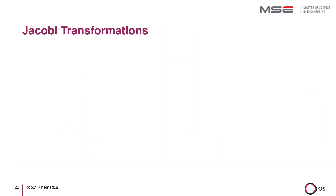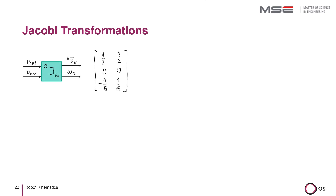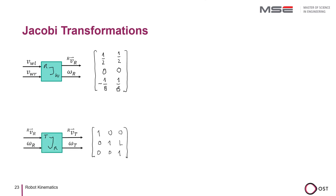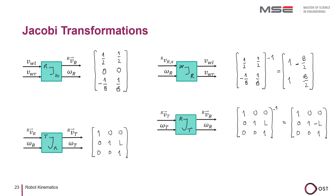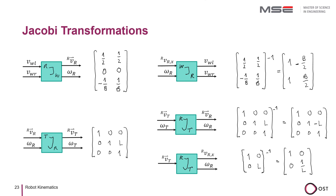We have found the following Jacobian transformations: transformation from wheel system to robot coordinate system; transformation from robot coordinate system to TCP coordinate system; transformation from robot coordinate system to wheel system; transformation of velocity vector and rotation speed from TCP system to robot coordinate system for omnidirectional robots; and transformation of velocity vector from the TCP system as travel speed and rotation speed into the robot coordinate system. That was the introduction to robot kinematics and our overview of the most important kinematic calculations for our mobile robot.